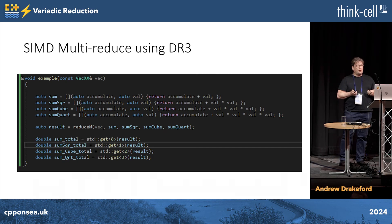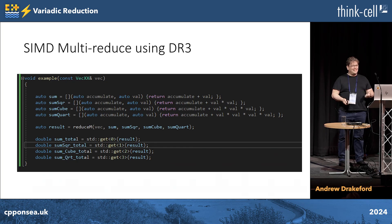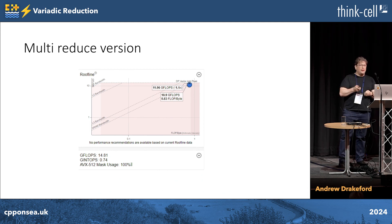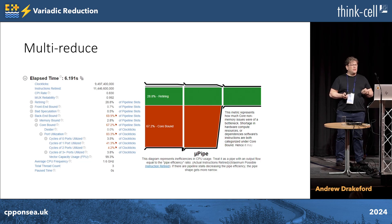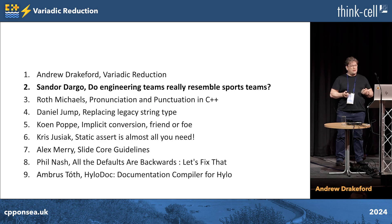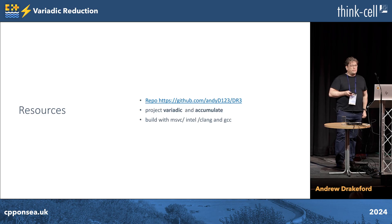Now trying reduce_m with our variadic multi-reduce: it wasn't favorable in flops per byte terms, but we're getting 8.3 flops per byte — really hammering it — and 10.9 gigaflops. This one completes in six seconds, the SIMD version finished in nine seconds, and std.reduce finished in 60 seconds. So we've still got a 50% performance improvement over the SIMD version.